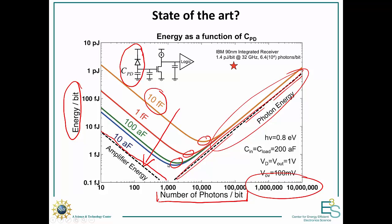So say we have a photodetector of one femtofarad, we're going to be wanting to use approximately 3,000 photons per bit for an optimal system energy.